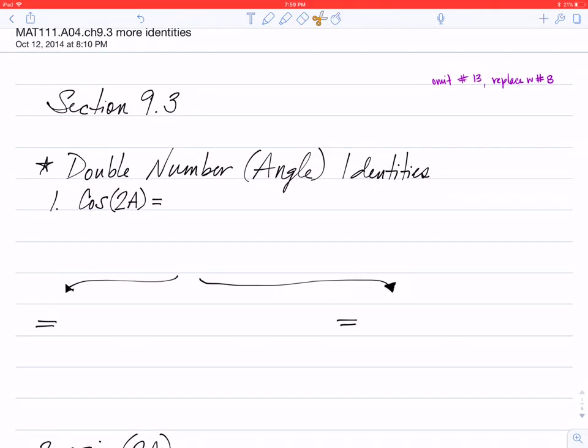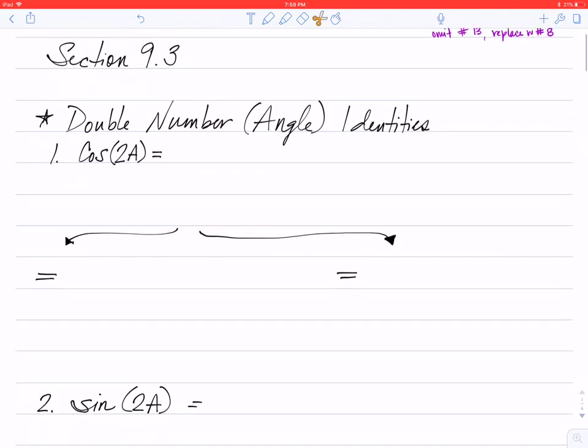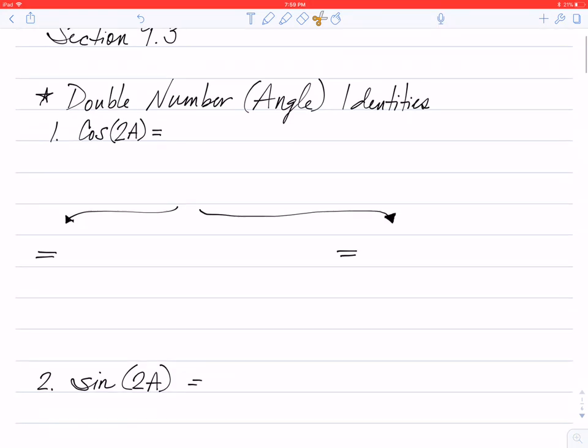Hey there folks, this is section 9.3 and I'd like to go through with you a couple more identities. The first type is the double angle identities, and the first one that we're going to look at here is the cosine double angle.